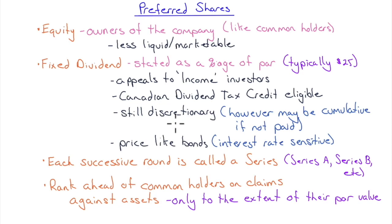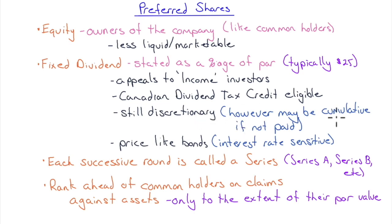The dividend on preferred shares is still discretionary, but it may be cumulative. If a company cancels its preferred dividend for two years and then reinstates it, all previously unpaid dividends accumulate and must be paid in full before any common dividends can be paid. That's the cumulative feature.